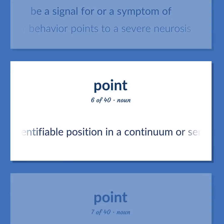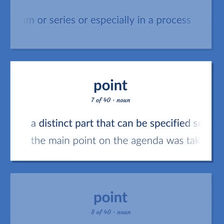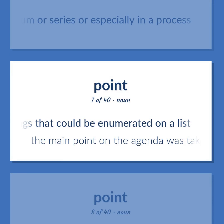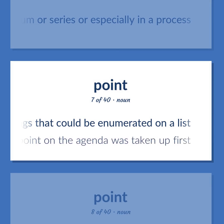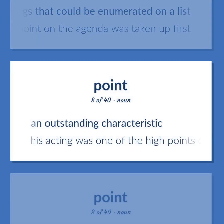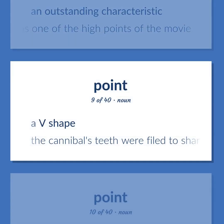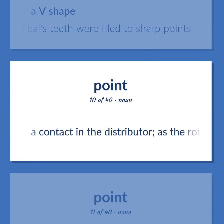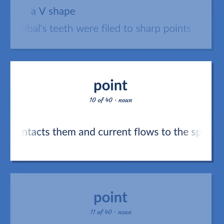Point: A specific identifiable position in a continuum or series, especially in a process. A distinct part that can be specified separately in a group of things that could be enumerated on a list — the main point on the agenda was taken up first. An outstanding characteristic — his acting was one of the high points of the movie. A V shape — the cannibal's teeth were filed to sharp points. A contact in the distributor: as the rotor turns, its projecting arm contacts them and current flows to the spark plugs.